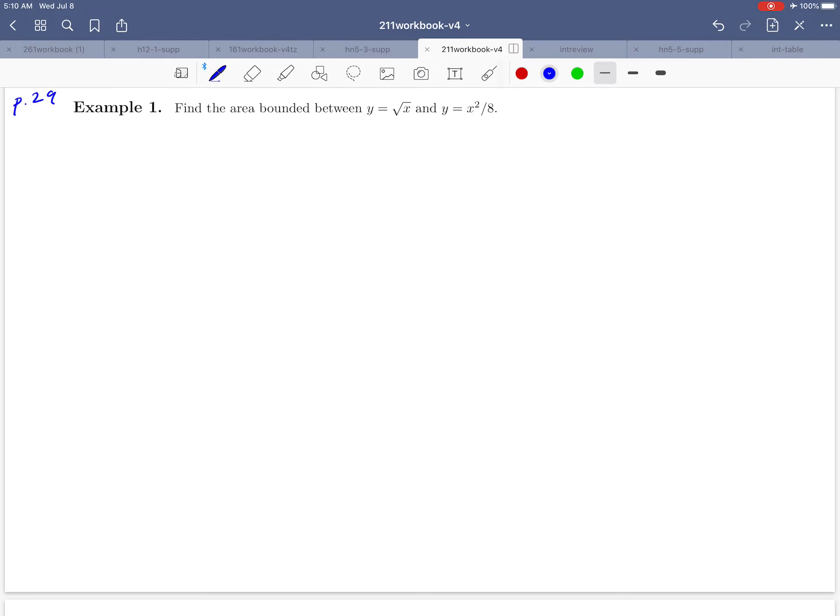And so it always helps on a problem like this to have a picture to start out with. So I want to just draw a very rough picture first. Let's think about what these two curves look like. So y equals the square root of x, you might remember that sort of has this type of a shape to it. And if you don't remember that, that's okay. You can always pull out a pocket calculator or maybe a graphing app and have it plot a picture for you. And the same is true for x squared over 8. That's actually an upward shaped parabola. It kind of has this sort of a shape to it.